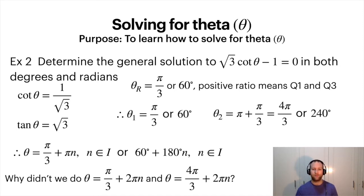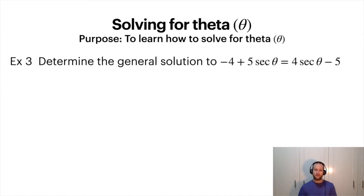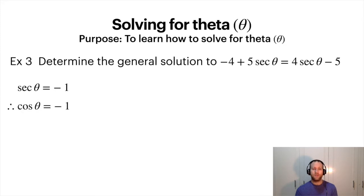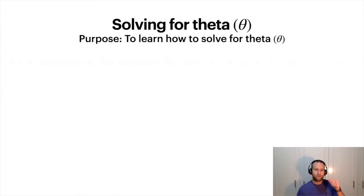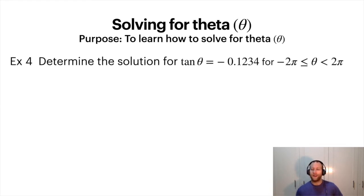What is the general solution for this one? If I rearrange it, bringing the secants to one side and whole numbers to the other, I get secant theta equals negative one. Turning this into a ratio we know: cosine theta equals negative one. This occurs at the angle pi — when the x value equals negative one, there's only one position for that. So the solution is pi plus 2 pi·n. At the negative x-axis, you just keep adding a full rotation to get back to that same point.